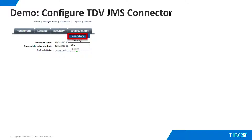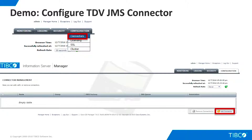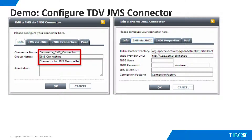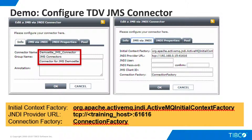Now we can connect TDV to the ActiveMQ instance. Open TDV Manager and click Configuration Connectors. The connector management page appears. Click Add Connector. On the Info tab, enter a connector name, group name, and annotation as shown here. On the JMS via JNDI tab, enter the Initial Context Factory, JNDI Provider URL, and Connection Factory information, which is shown here for readability. Replace TrainingHost with the URL of your ActiveMQ instance. Click OK, and the connector is created.